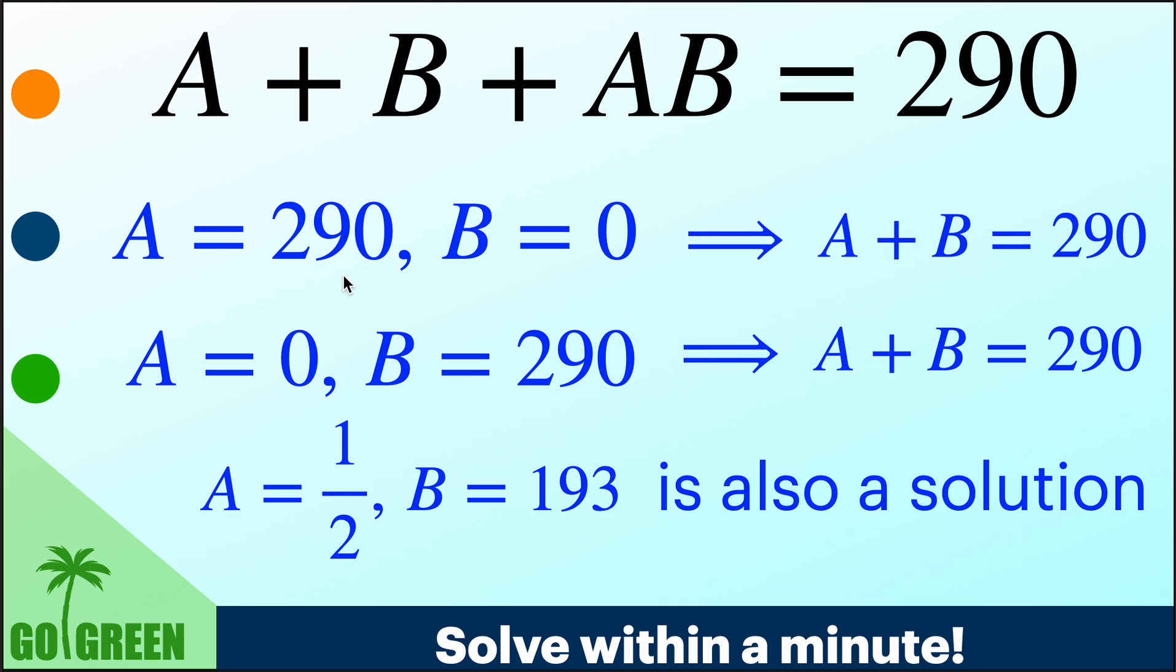And what about in third case? If you have A equal to half, then half again is not a natural number and therefore, we also cannot actually accept the third solution. So what is the solution?